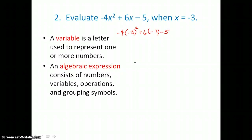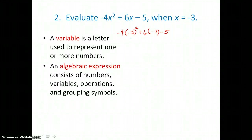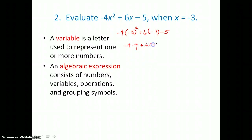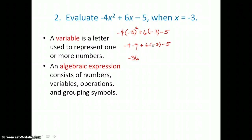Now we have a numerical expression we can apply the order of operations to. We have no grouping symbols to remove, so we go to step 2: evaluate powers. Negative 3 squared is negative 3 times negative 3, which is positive 9. Then we have plus 6 times negative 3 minus 5. Step 3 says to multiply working left to right: negative 4 times 9 is negative 36. Next, 6 times negative 3 is negative 18.